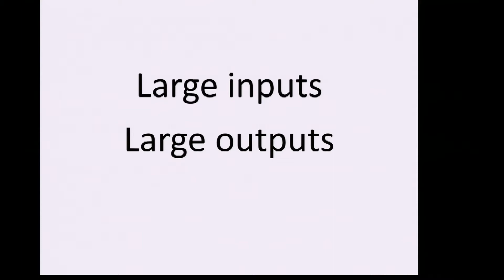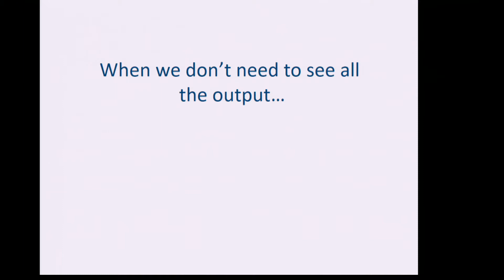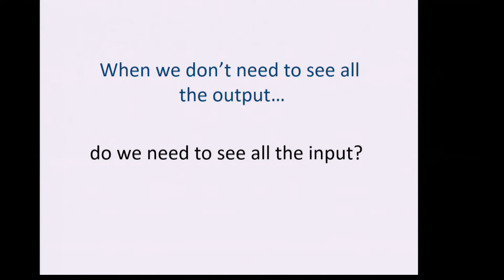What I want to talk about today is the setting when you have a large output you need to compute, but you don't actually need the whole output — you just need a piece of it. If you only need a piece of the output, do you have to compute the whole thing? Or can you just compute what you need? We're interested in sublinear time algorithms: algorithms whose running time is very small compared to the size of the input and very small compared to the size of the output.